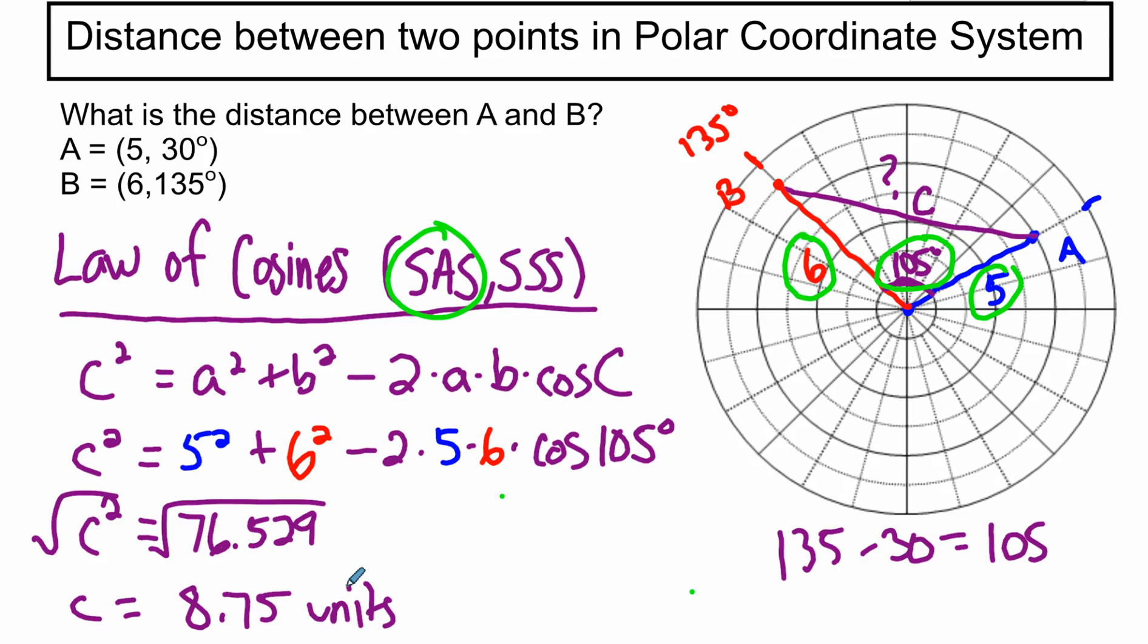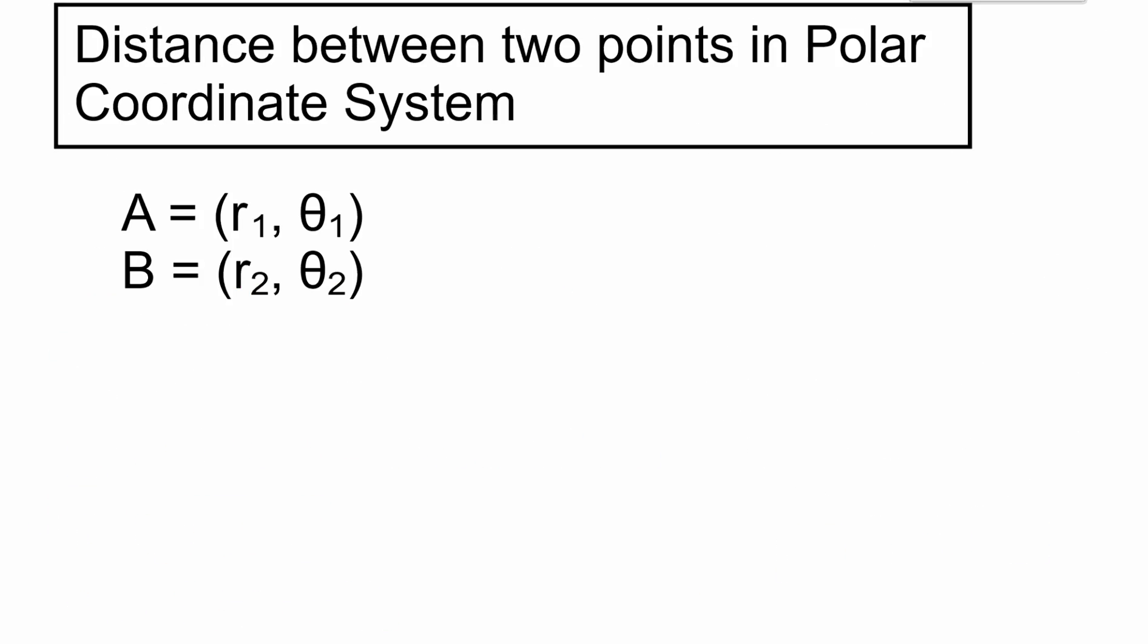Cool. So now, how do we generalize this? Well, obviously, we're going to use the law of cosines. So let's say we've got two, any points with any radius and any theta. How do we find the distance between these two in the polar coordinate system?